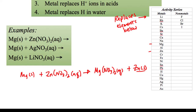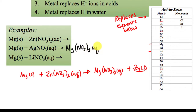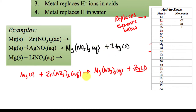For the next one, magnesium is going to attempt to replace silver. Magnesium is above silver on the activity series, so that reaction would happen. I write magnesium nitrate aqueous, and silver solid comes out — these are always going to be solid because they're metals coming out of solution. Going back to balance, I put a two here and a two here to make sure this is balanced.